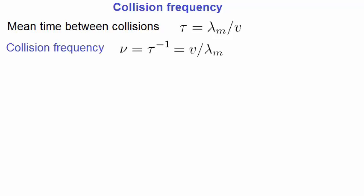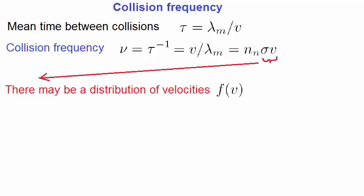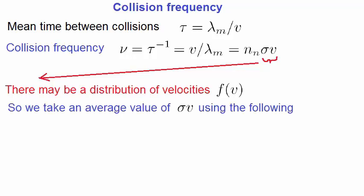As well as the mean free path, it's also very useful to define the collision frequency. The average time between collisions, tau, can be written as the mean free path, lambda, divided by the speed. We define the collision frequency to be the inverse of tau, which is v over lambda. Substituting the expression for lambda, which if you remember is 1 over n sigma, we have this. This equation is fine if we have a single value for v. But the issue is that most of the time we don't. We have a distribution of velocities, f.